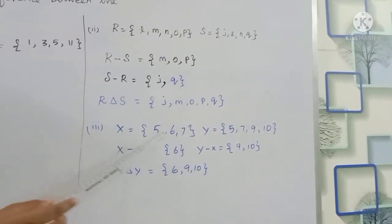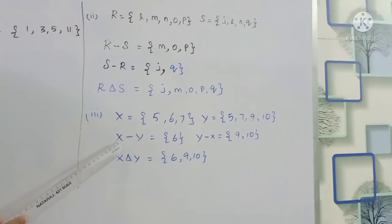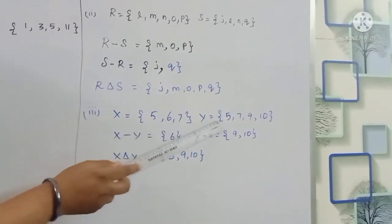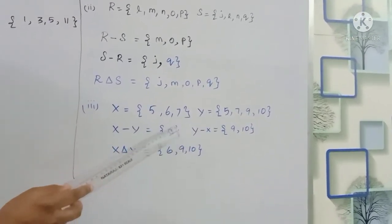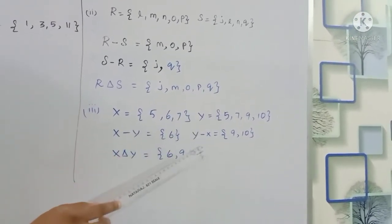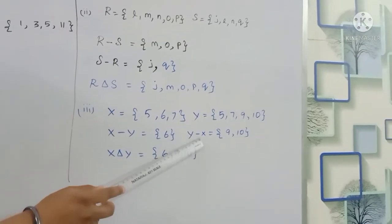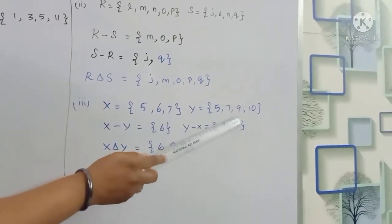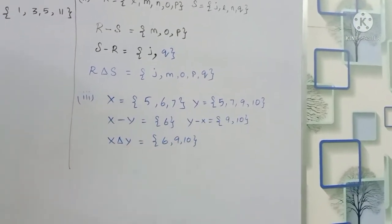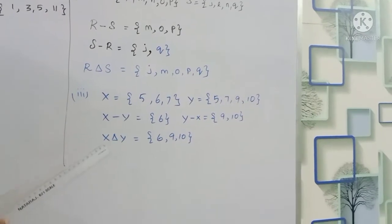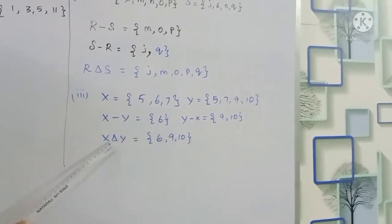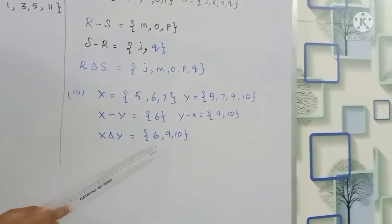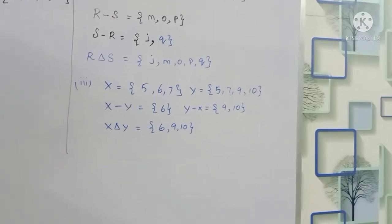For X, Y, and Z: X minus Y gives {5, 6, 7}. Y minus X gives {5, 7, 9, 10}. X symmetric difference Y = {6, 9, 10}. This is the book answer.